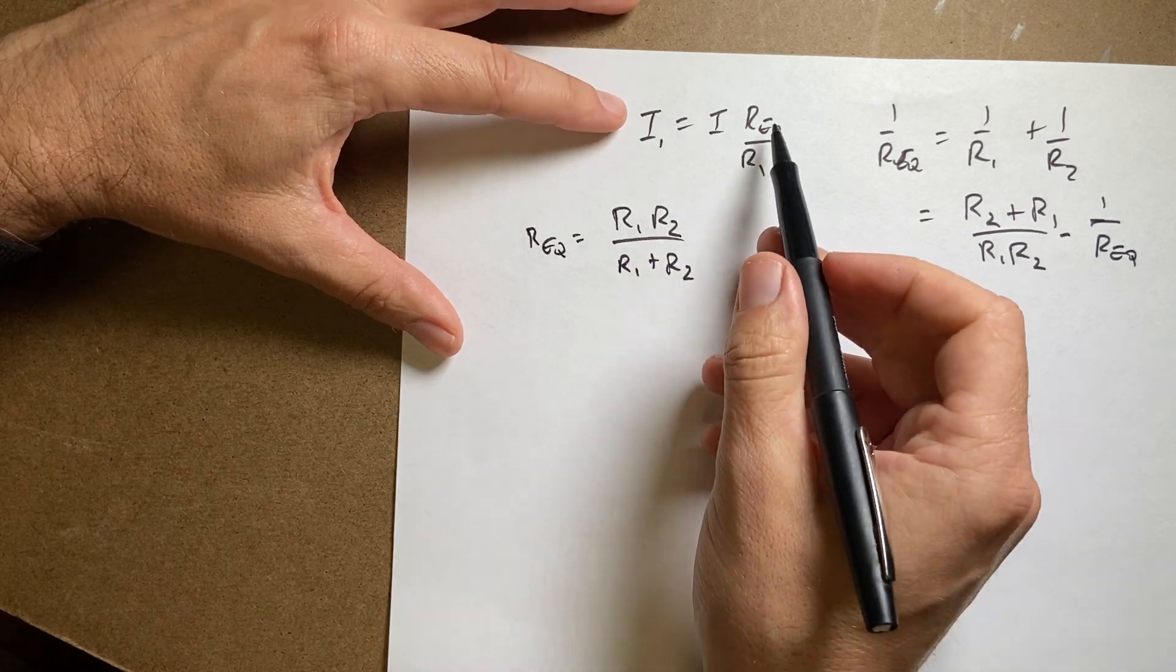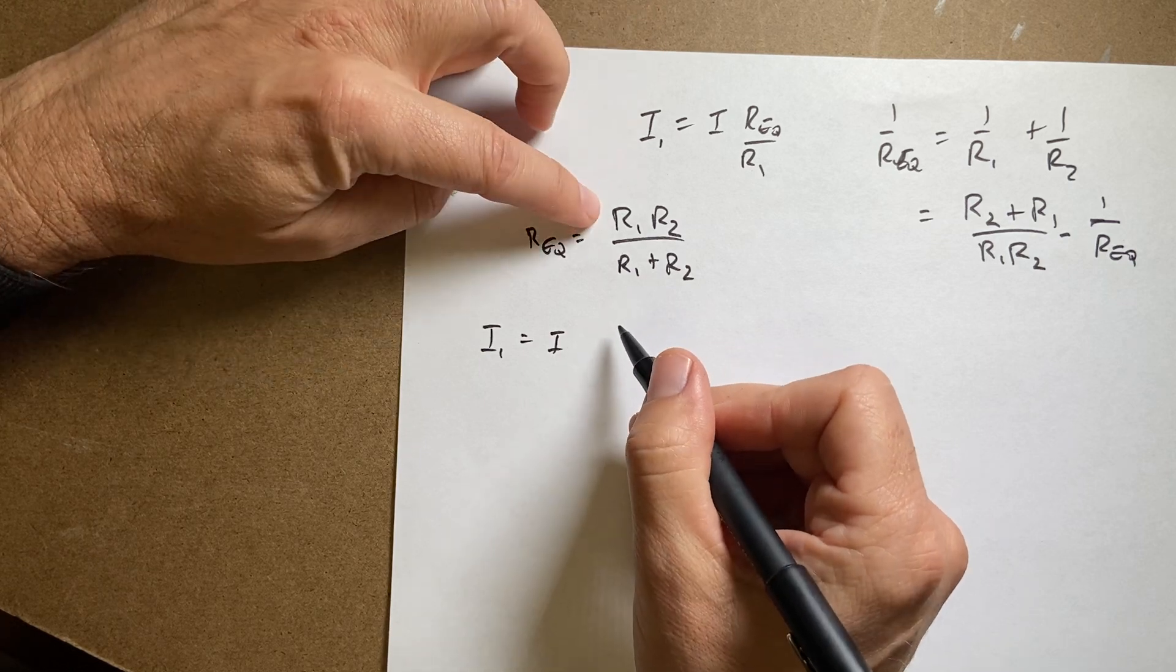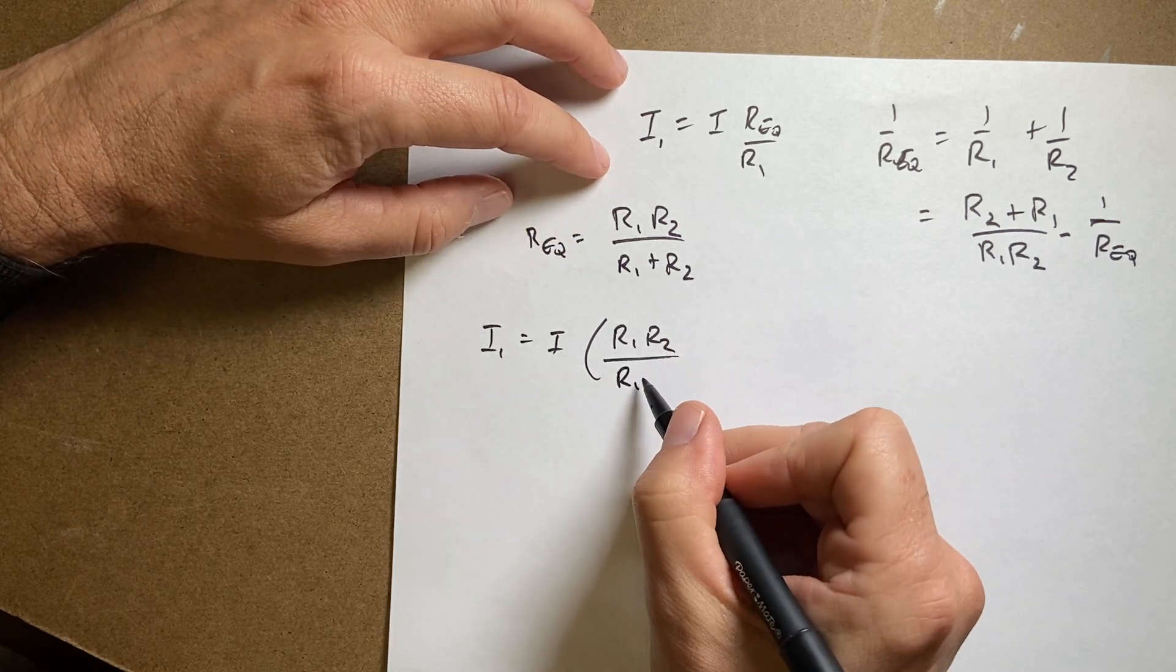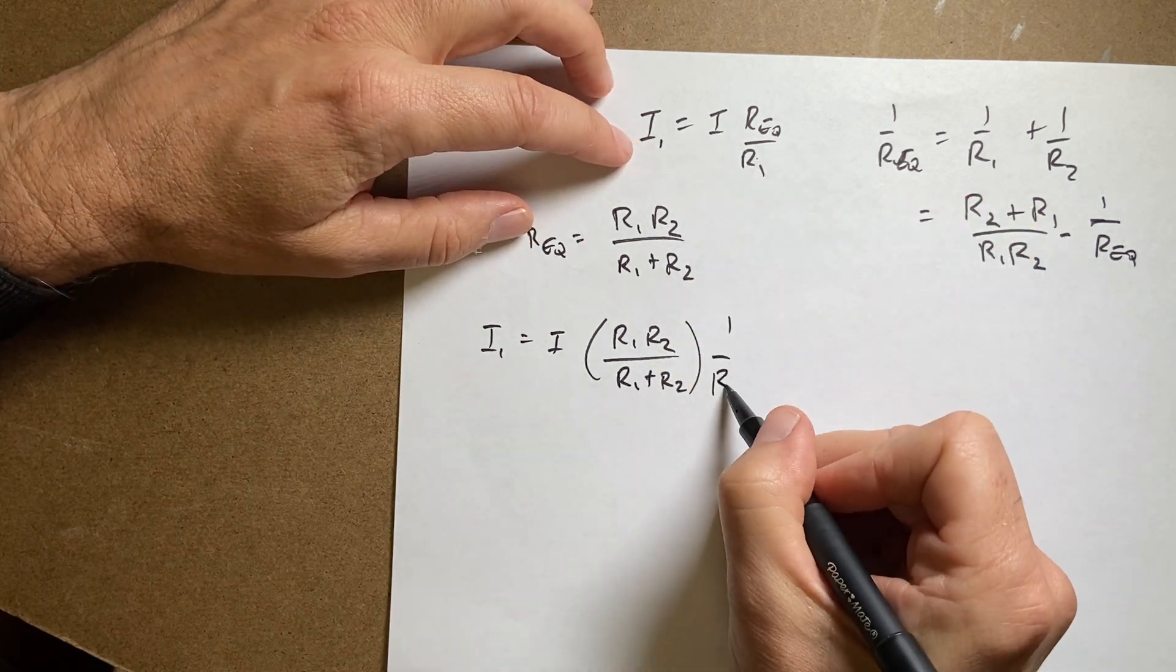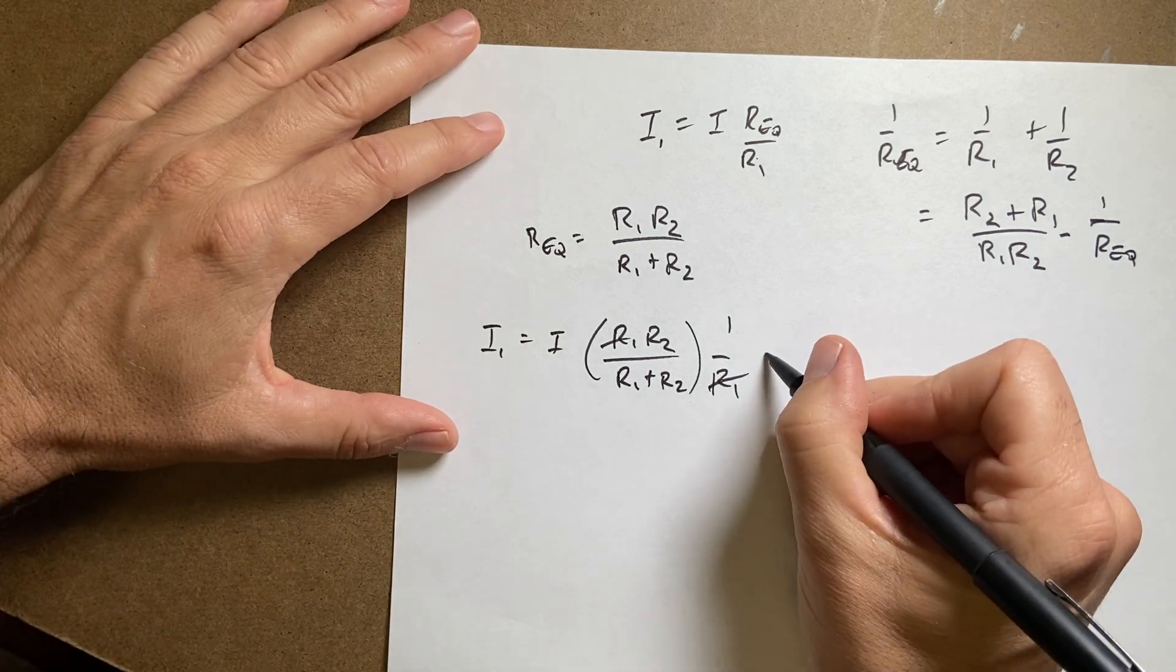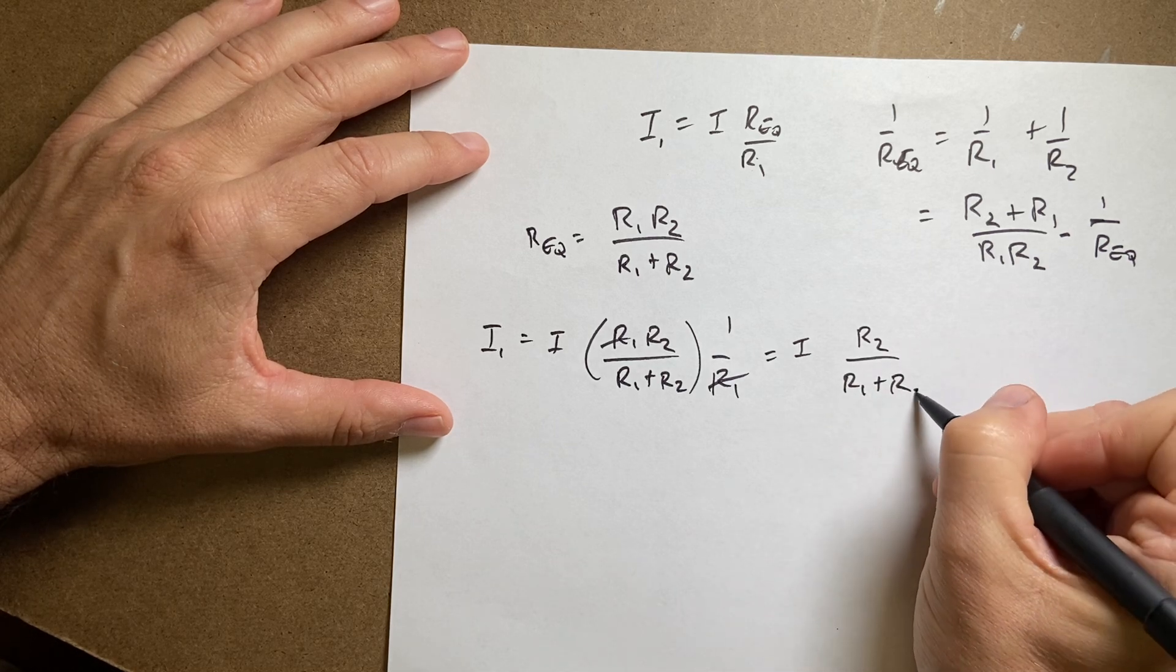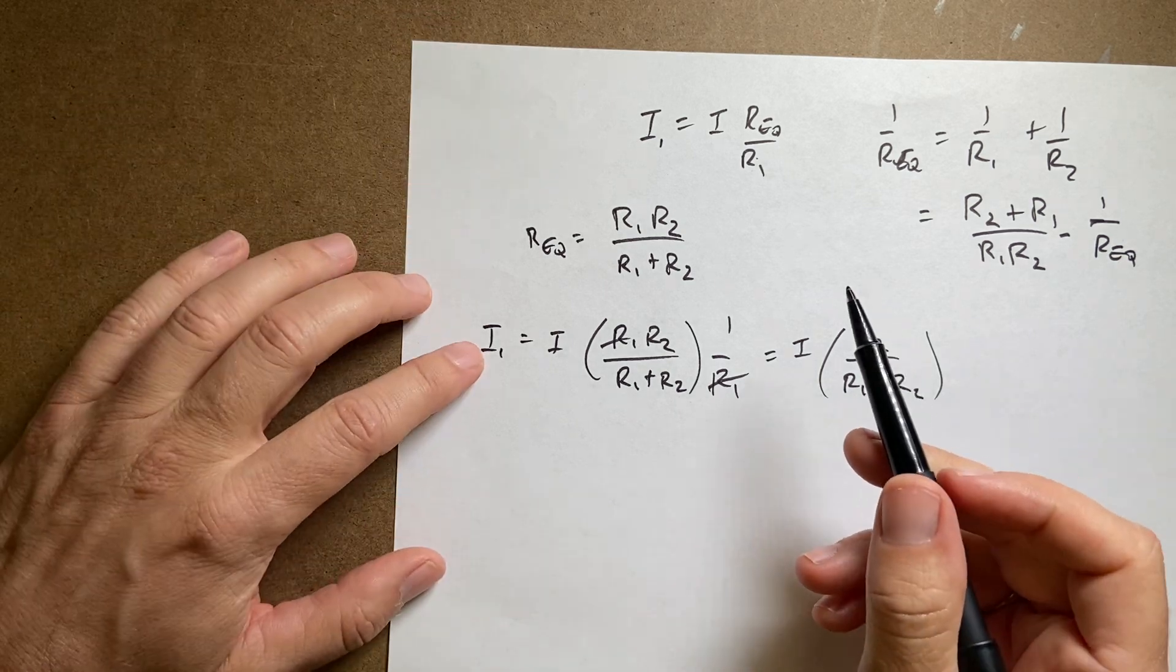Now if I put this in up here I get I1 equals I times R equivalent which is going to be R1 R2 over R1 plus R2. And then I have to divide by R1. And those cancel. So I get this is equal to I times R2 over R1 plus R2. And there's my voltage divider. I'm sorry, current divider.